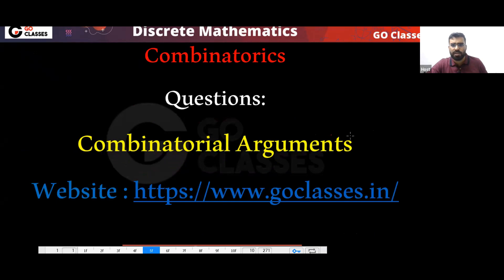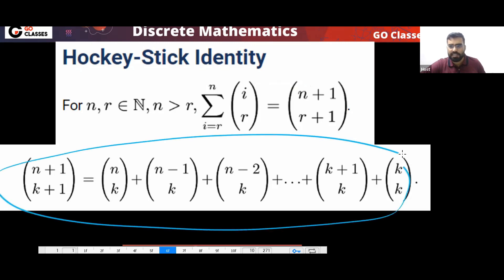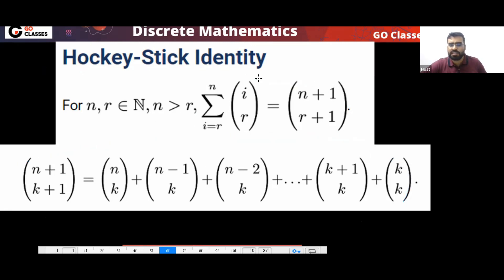Let's see some questions on combinatorial arguments. I just want you to create one story for me. This we have already seen, from KK to NK the summation is N plus one, K plus one. What was the story for this? The story was the maximum element story. This identity is called the hockey stick identity.